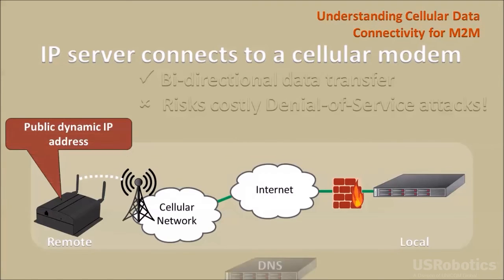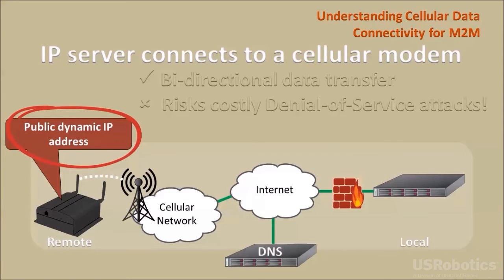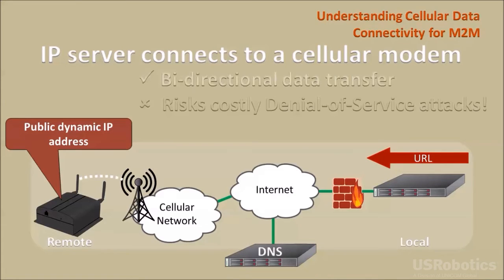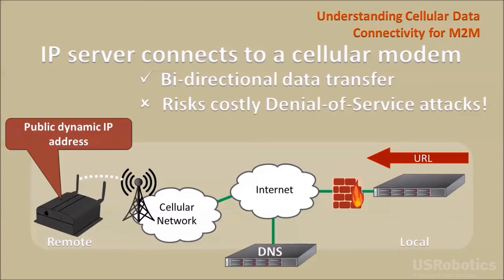Here is a solution that does not use a public static IP address. The cellular modem is provisioned with a public dynamic IP address and is configured to use a public DNS to define a fixed URL for the cellular modem. Once the server makes a connection to the URL, data can transfer across the connection in either direction. While this approach doesn't have the drawback of a static IP address, it still uses a public IP address on the internet that is vulnerable to denial of service attacks.